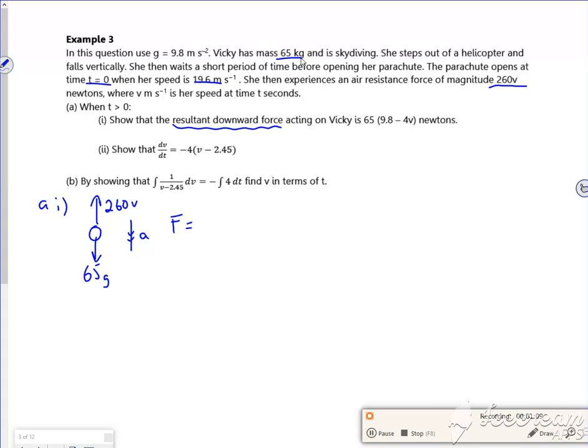When she opens her chute, she's traveling down and gets a resistive force of 260V. So my resultant force is the direction of travel minus whatever's opposing it. So that would be 65G minus 260V. Now if you look at the format, we've taken the 65 out. So if I take the 65 out as a factor, I've got G minus 4V, which very much looks like it, but if I just change the G into 9.8. So that's quite nice that. We've done that one.